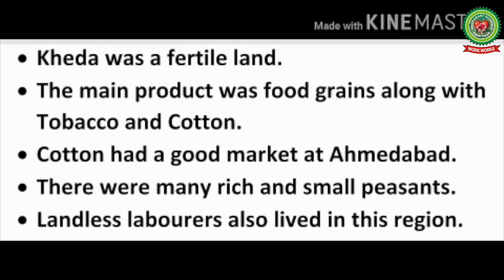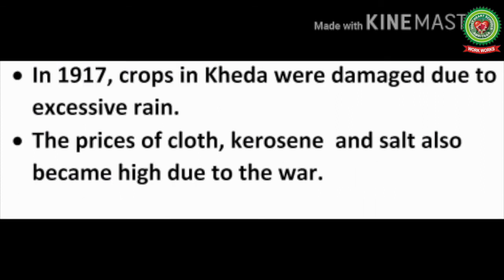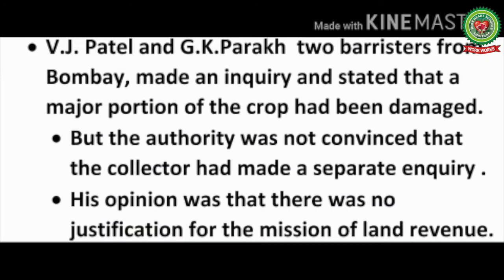In 1917, crops in Kheda were damaged due to excessive rain. Prices of cloth, kerosene, and salt also became high due to the First World War, as India was getting these things from other countries. V.J. Patel and G.K. Parek, two barristers from Bombay, made an inquiry and stated that a major portion of the crop had been damaged, but the authorities were not convinced. The collector made a separate inquiry and his opinion was that there was no justification for remission of land revenue.